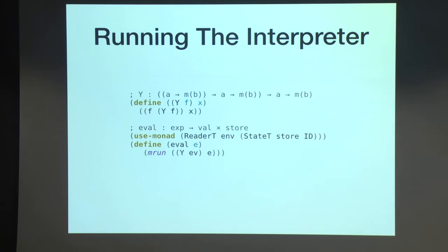So to run this simple concrete interpreter, we need our favorite y-combinator, or a fixed point finder, which ties the knot, so to speak. And then to run our evaluator, we need to instantiate some stack of monads. So here I have reader-t on top of state-t on top of id. These are monad transformers. And then the first thing I do is I tie the knot on ev with the y-combinator, and I call mrun, which just instantiates some initial state for the monadic state.